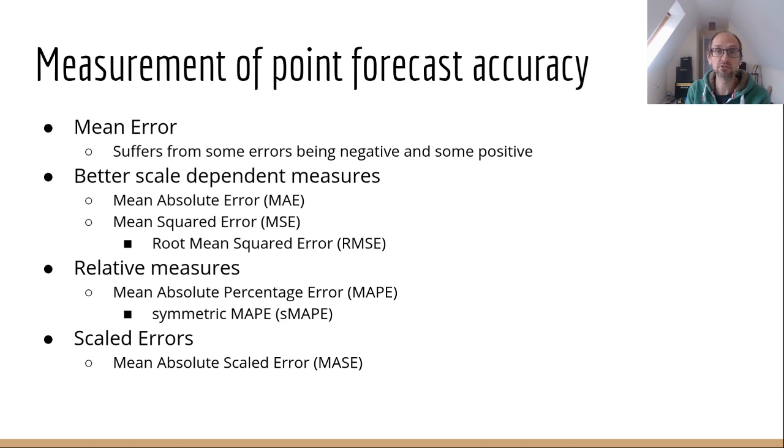Another way to deal with negative errors is to take the square of them, and then take the mean of the sum of the squares. That's called the mean squared error. The units of that will be in whatever units your time series is squared, so that's often a little bit confusing to interpret. So what you could do is take the square root of the mean square error, which is called the root mean squared error (RMSE), and that would give you a very similar value to your mean absolute error.